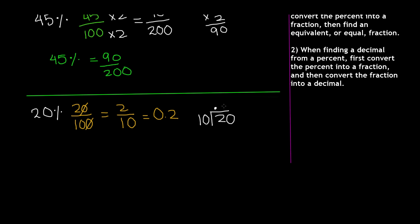We know that 10 goes into 20 twice, and you get 0.2 or 0.2. So that means 20% is equivalent to 2 over 10, or the decimal is 0.2 or 2 tenths.